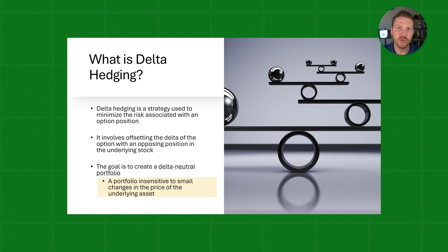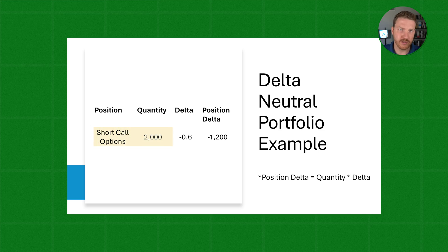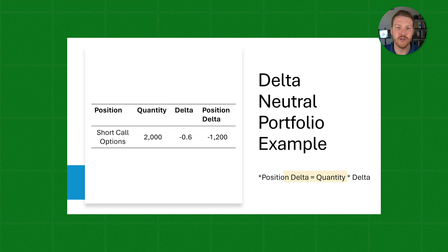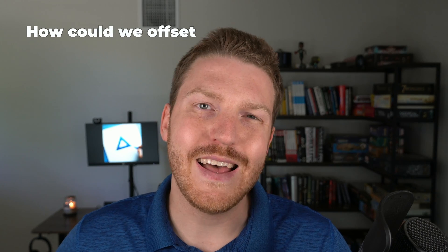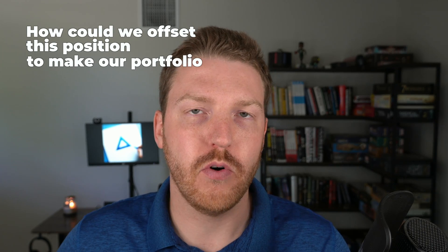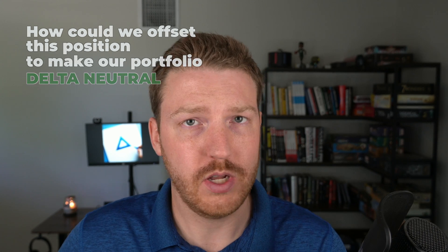This portfolio would be insensitive to small changes in the price of the underlying asset. So if there was a small change in the stock's movement, your portfolio should see $0 of gain or loss because the gains and losses of both positions perfectly offset one another. Now let's look at an example where we have shorted 2,000 call options, and each of these call options has a Delta of negative 0.6. We can find our total position Delta by taking the Delta multiplied by the quantity, which gives us a position Delta of negative 1,200.